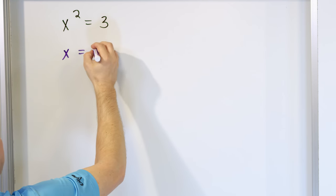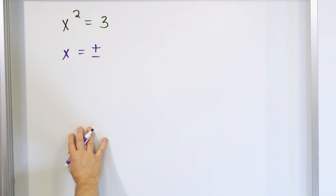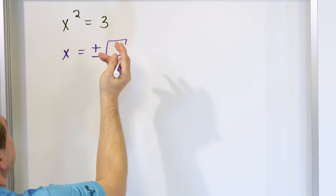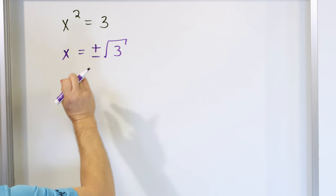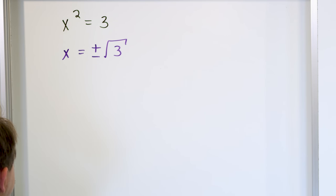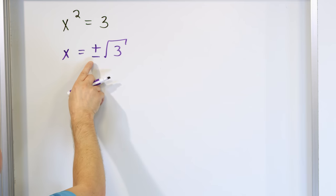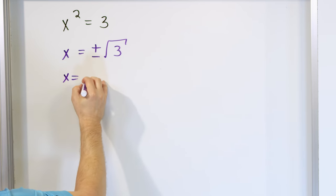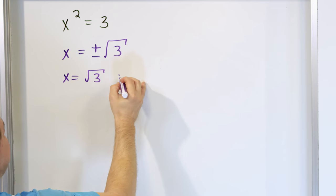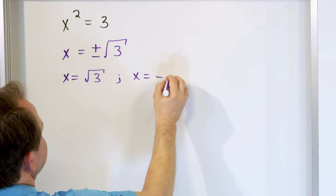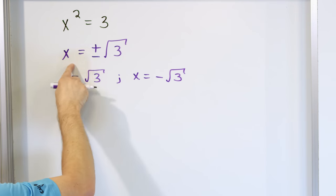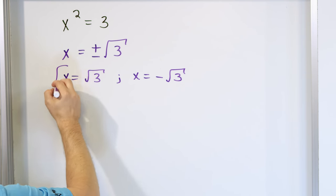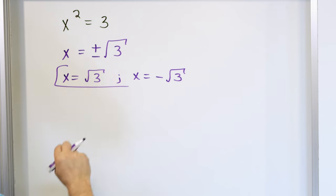When we apply a square root ourselves, we must put the plus or minus — we talked about that in detail before. We take the square root of both sides, but we have to put a plus minus in front. So because we have a plus and a minus, there are actually two solutions: positive square root of 3 and negative square root of 3. You can circle the plus minus square root of 3, or write out the two solutions separately.